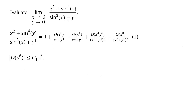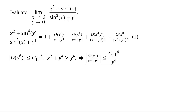We know that the modulus of big O of y to the power of 6 must be less than or equal to c1 times y to the power of 6 for some constant c1. And x squared plus y to the power of 4 must be greater than or equal to y to the power of 4. So the modulus of big O of y to the power of 6 over x squared plus y to the power of 4 is less than or equal to c1 times y to the power of 6 over y to the power of 4, which equals c1 times y squared, which tends to 0 as y tends to 0. Thus, by the squeeze theorem, big O of y to the power of 6 over x squared plus y to the power of 4 tends to 0 as x tends to 0 and y tends to 0.